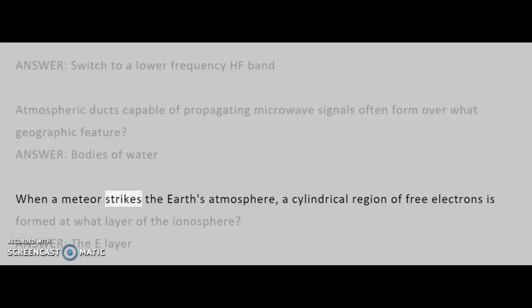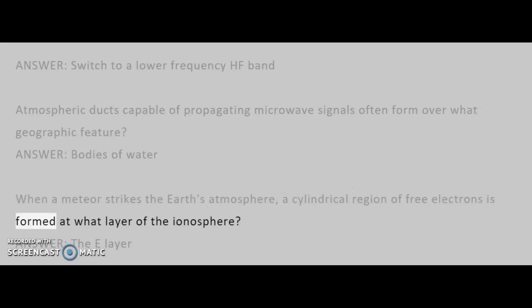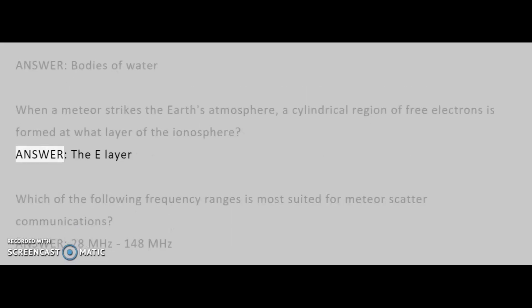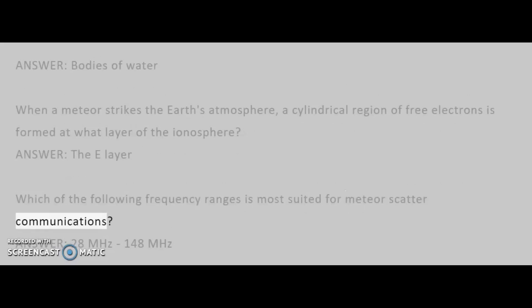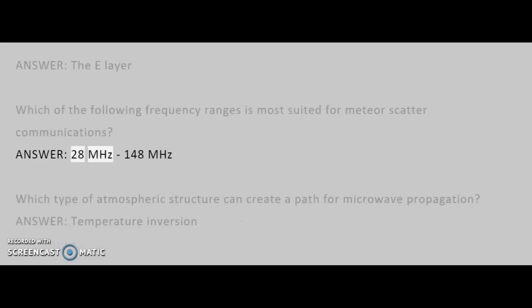When a meteor strikes the Earth's atmosphere, a cylindrical region of free electrons is formed at what layer of the ionosphere? Answer: the E-layer. Which of the following frequency ranges is most suited for meteor scatter communications? Answer: 28 MHz to 148 MHz.